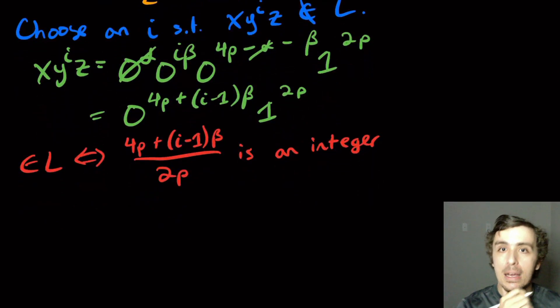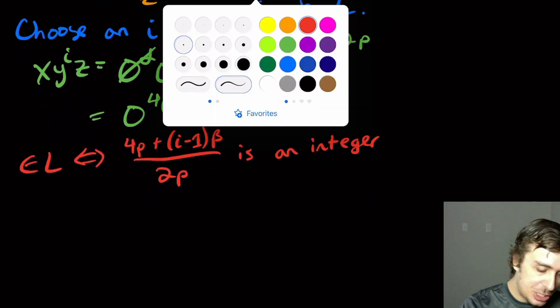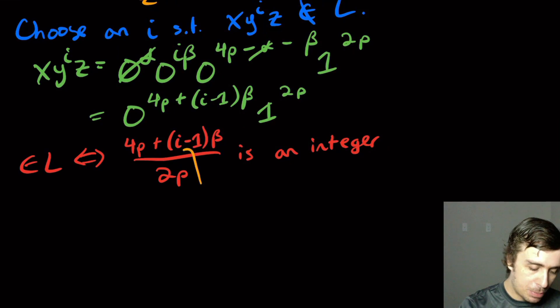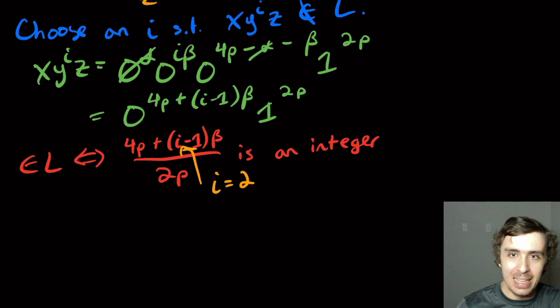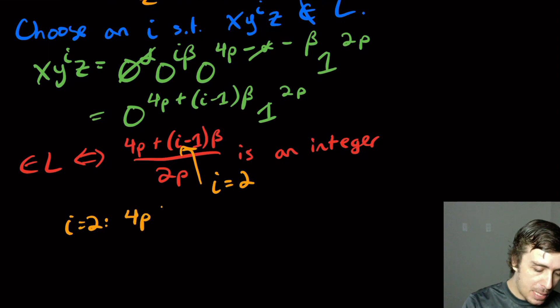OK, that's the only way it could possibly be in there. So let's actually substitute the value in. So let's put in, let's say, i equal to 2. We can't put 1, because that's what the original string was, and that's in the language. So we can't prove it's not in the language if we choose i equal to 1. So let's look at i equal to 2. So that's 4p plus beta over 2p.